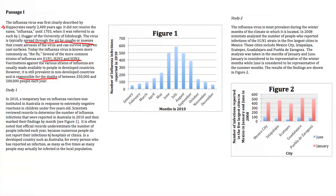The passage goes on to discuss two different studies of infection rates of the influenza virus. The first study is a month-by-month count of people reportedly infected with the influenza virus — people that actually went to the doctor, clinics, or hospitals because they had the flu. The passage notes that as many as five times as many people may actually have been infected, because people in developed countries don't necessarily go to the doctor when they have the flu.